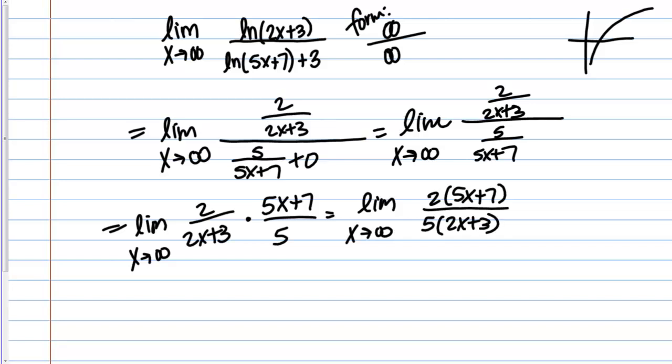What happens if I plug in infinity now? I'm still going to get the form infinity over infinity. 5x plus 7 on top, 2x plus 3 on bottom times constant. I'm going to get the form of infinity over infinity.